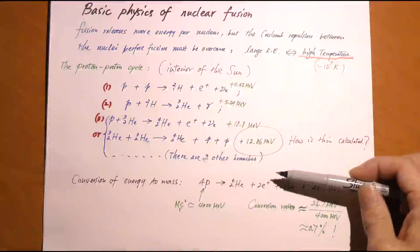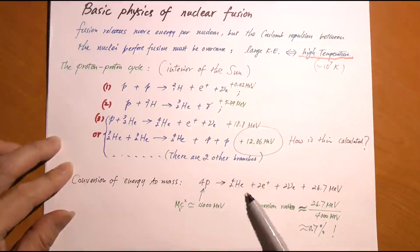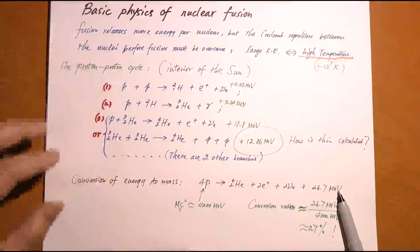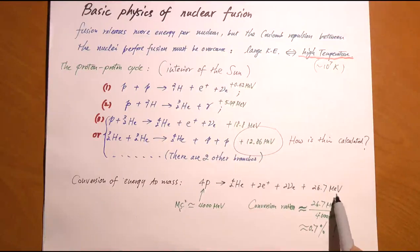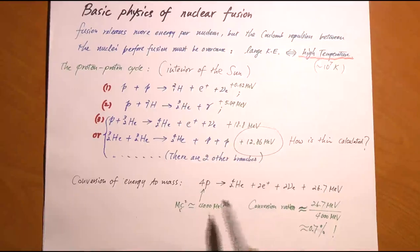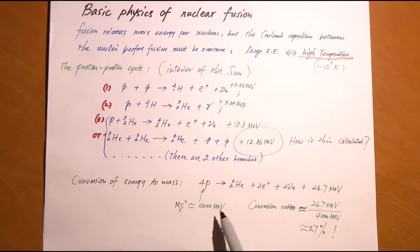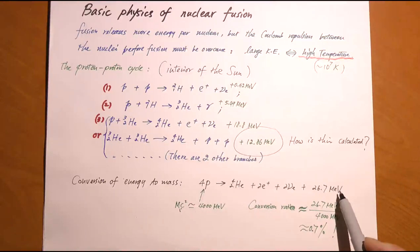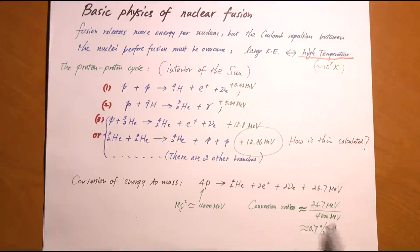The combined effect of the proton-proton cycle is: starting with four protons, you end up with helium plus two positrons plus two electron neutrinos plus 26.7 MeV. The initial rest mass of four protons is roughly 4000 MeV, and the energy released is 26.7 MeV. The conversion ratio is 26.7 MeV divided by 4000 MeV, giving about 0.7%—a huge amount of mass-to-energy conversion.